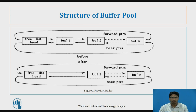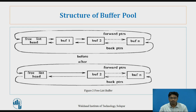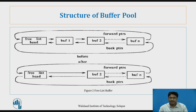After allocating buffer 1, in the after diagram the free list head's forward pointer now points to buffer 2, and buffer 2's previous pointer points to the head. If the kernel returns a buffer, we need to attach that returned buffer at the tail of the free list — that is, after buffer n we attach the returned buffer.